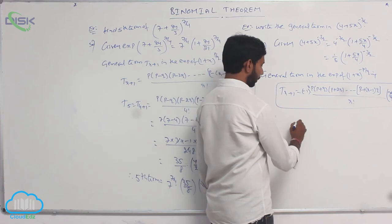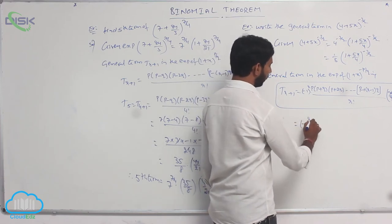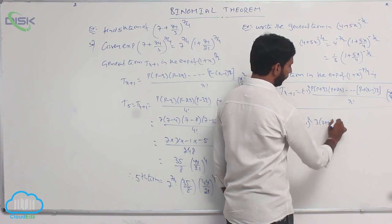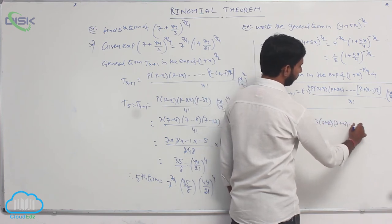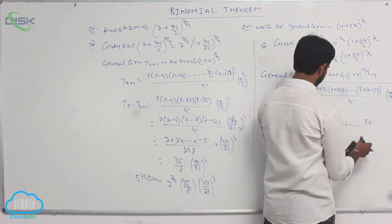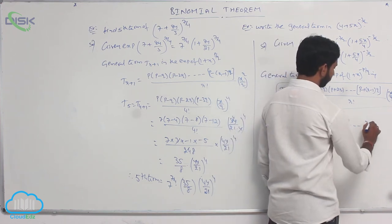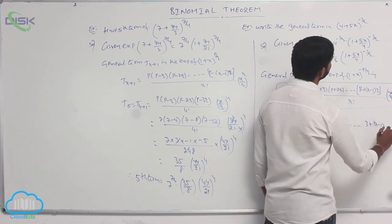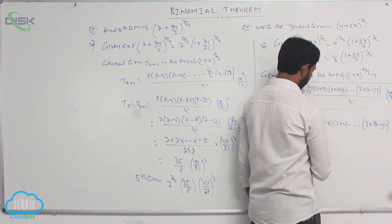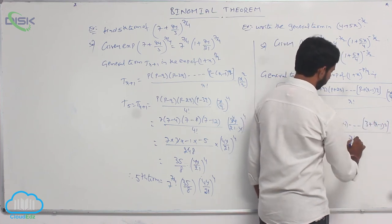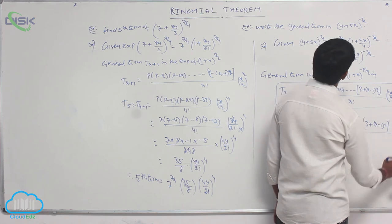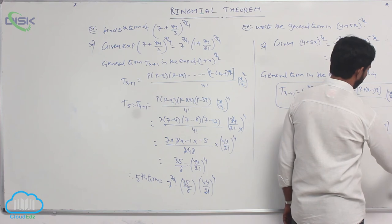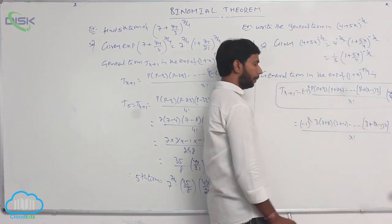Substituting the values of p and q: (−1)^r · here p = 3, so 3 · (3+2) · (3+4) · ... · (3 + (r−1)·2) / r! · (x/q)^r. Here x/q = (5x/4)/2, that is 5x/8 whole power r, giving (−1)^r · 3·5·7·... · (1+2r) / r! · (5x/8)^r.